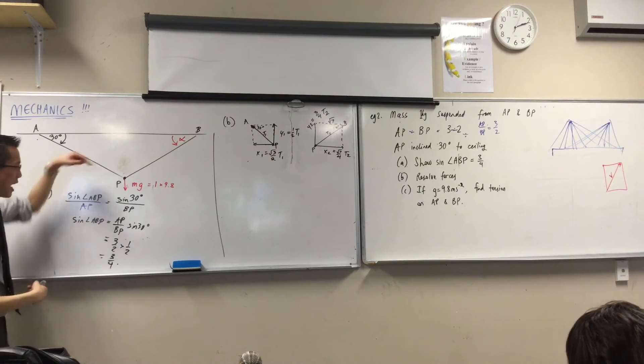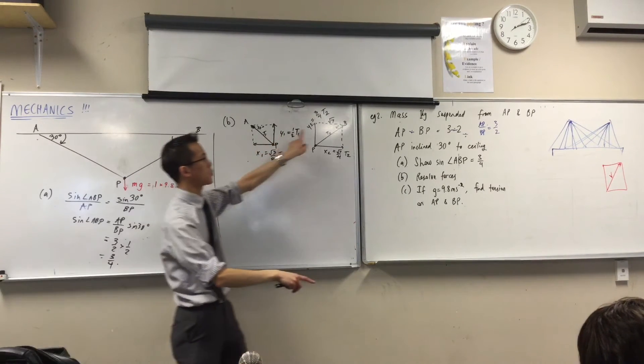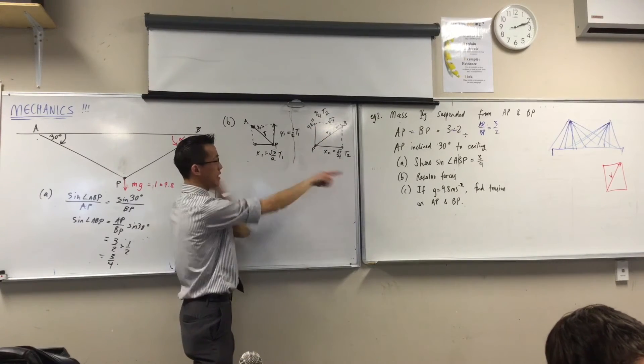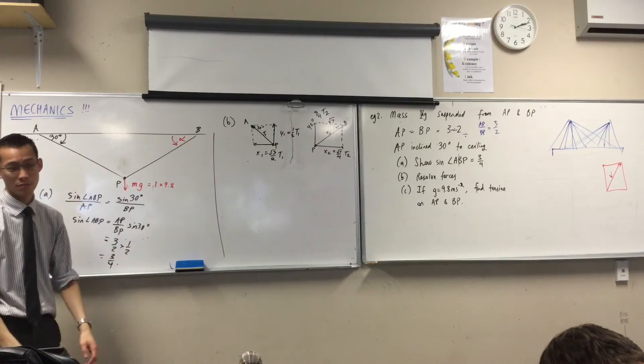So you can see I've got forces going this way, I've got forces going upwards, two of them, this one and this one, and then I've got forces going that way, two of them going in opposite directions. And remember that particle is stationary.